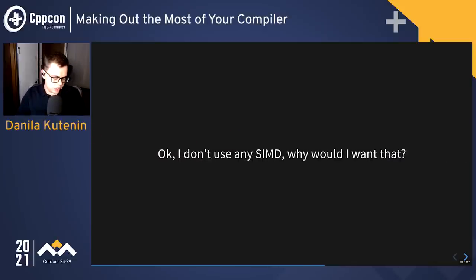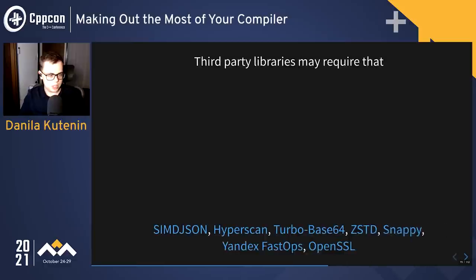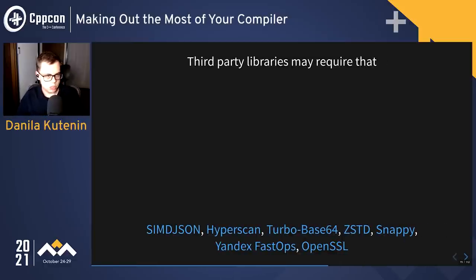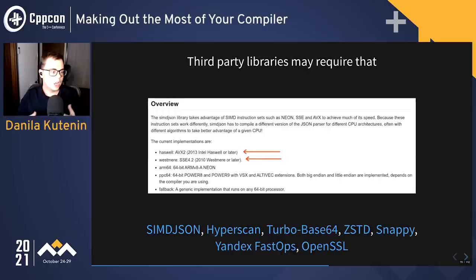I've been talking a lot about micro-architecture and new instructions, but most C++ developers don't write SIMD directly. The valid question is: why would you want that? Third-party core libraries really require those instructions. For example, SIMD JSON has a division between Westmere and Haswell: if you have SSE 4.2 you get a better implementation; if you have Haswell with AVX2 you get an even better one; and the fallback is slower. You probably don't want to waste cycles in JSON parsing, so it's a reasonable approach.